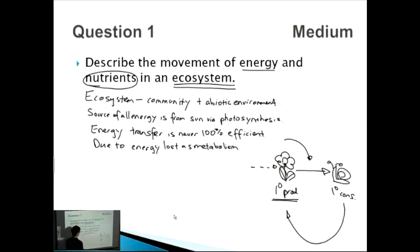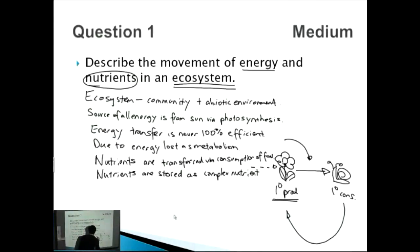So we talked about the energy transfer. And now let's talk about the transfer of nutrients as well. As we go from primary producer to primary consumer, we have to think about the nutrients being a complex form of the nutrients which gets assimilated into the primary consumer. So nutrients are transferred via consumption of food, and they're stored as complex nutrients.